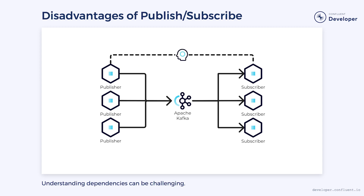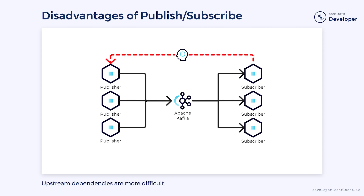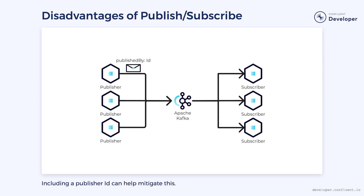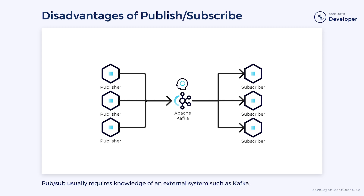Although the reduced coupling adds benefits, it can make it more difficult to understand dependencies in the system. The layer of indirection between services means it can be tricky to track down all of the systems impacted by a change. This isn't too bad going downstream, where we can usually access a list of the subscribers. It's a little worse looking upstream because the messaging platform may not keep track of where a message originates. It can be a good idea to include metadata in the message indicating the origin to help mitigate this — just make sure downstream systems don't rely on that metadata or you start to introduce coupling. Furthermore, to create interaction we usually rely on an external system such as Apache Kafka. These systems come with their own learning curve and require expertise to deploy and manage. This can be mitigated using cloud services, but we can't completely avoid the extra work.